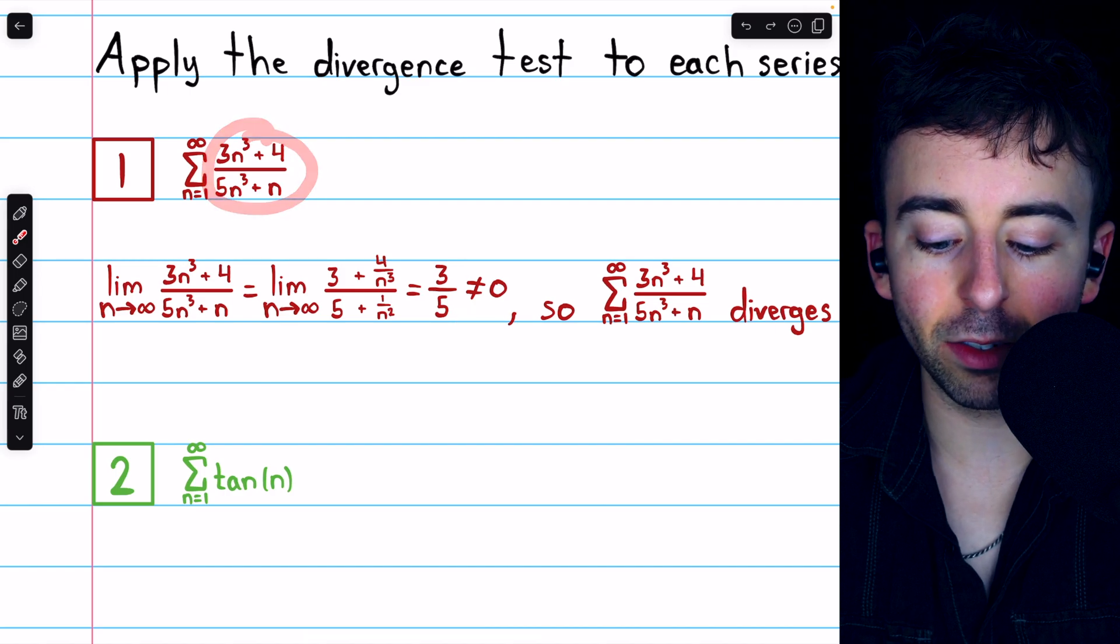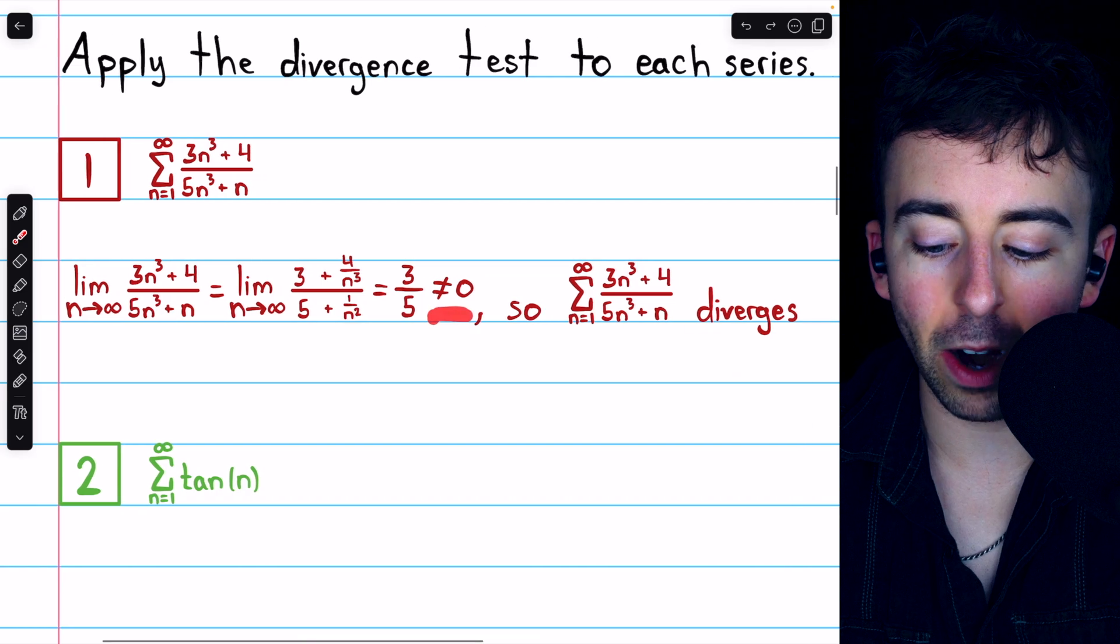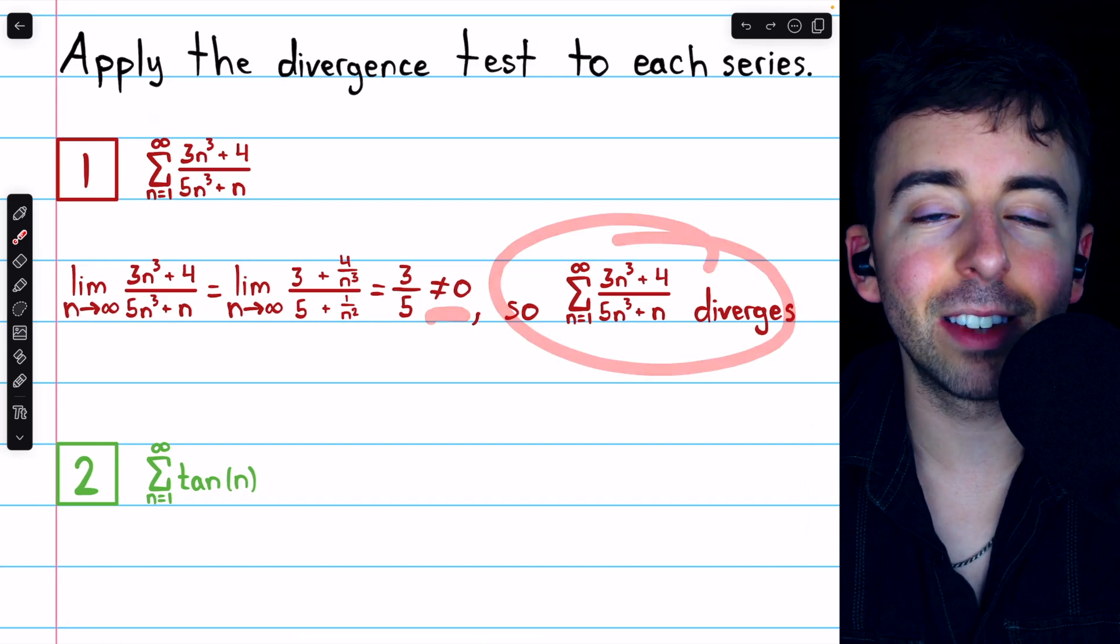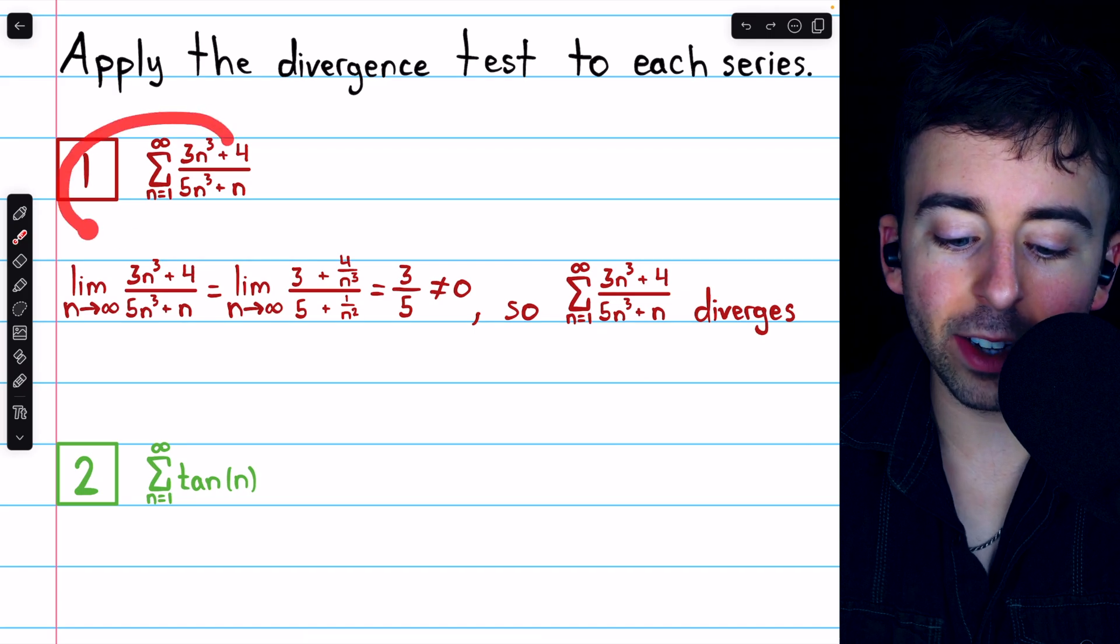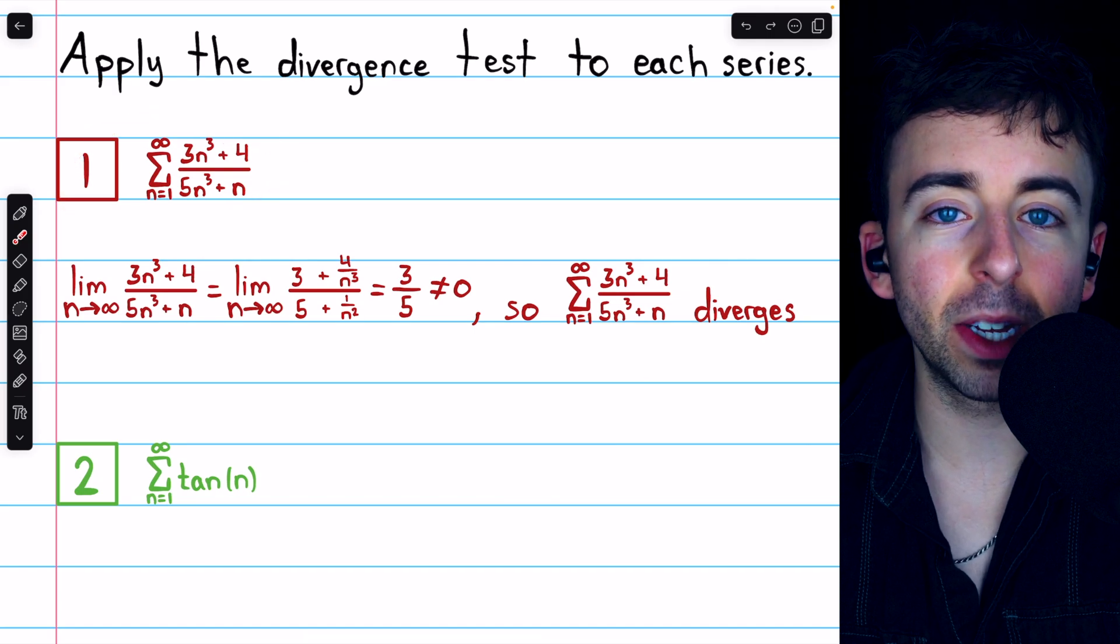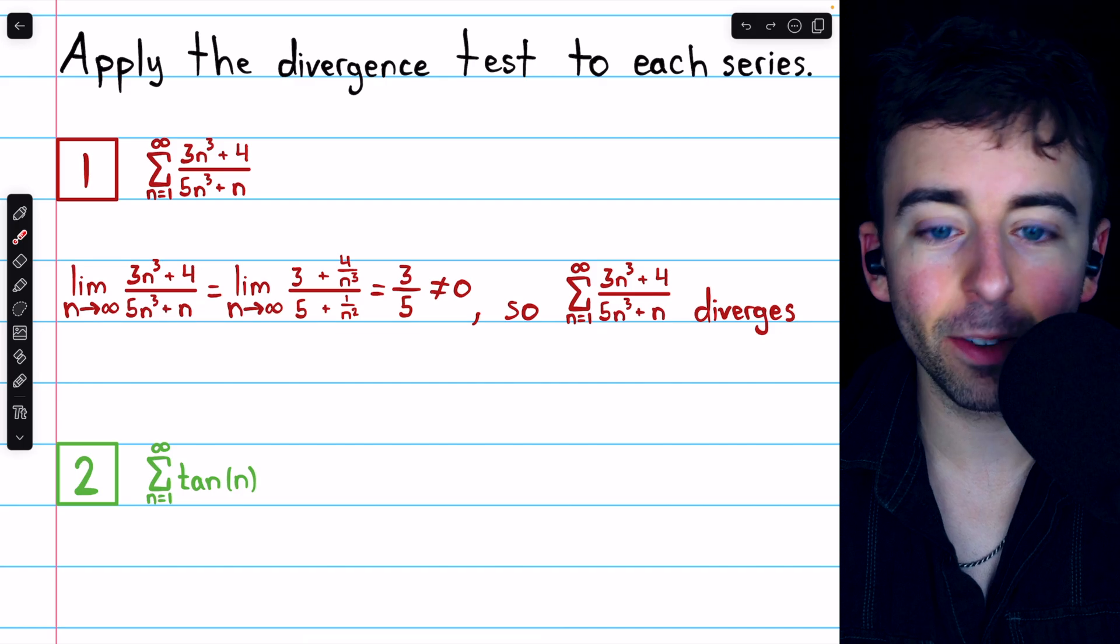Since the terms of this series do not approach zero, it must be that the series diverges by the divergence test. Then we wouldn't have to waste any time trying to show that this series converges, because we know that it does not. All right, let's move on to the second example.